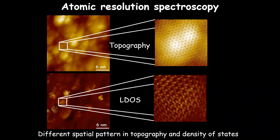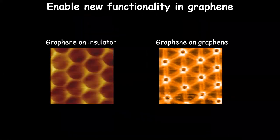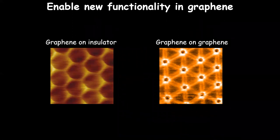Those are the basic techniques we'll use: spectroscopy and topography measurements to probe the electronic density of states and the topography of the samples after making heterostructures. Today I want to talk about at least two experiments we've done on graphene where, by creating heterostructures with graphene and other materials, we can enable new functionality. And at the end, I'll tell you about new work we've done with tungsten selenide, where we've also created heterostructures and seen some interesting new physics.